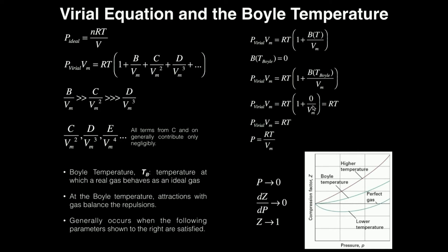Since zero over the molar volume is still zero, all you're left with is P times the molar volume equals RT times one, which is just RT. That gives P times the molar volume equals RT, and if you divide through by the molar volume, you get one form of the ideal gas equation: P equals RT over the molar volume.